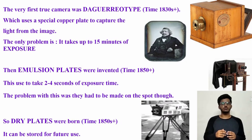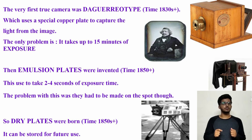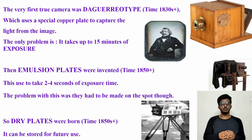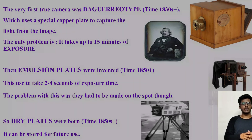Evolution of the camera — it all started with camera obscura in the 11th century. The very first true camera was invented in the 1830s, which was the daguerreotype, using a special copper plate to capture light from the image. It used to take up to 15 minutes of exposure to fully capture the image. Then dry plates were born in the 1850s, and this camera used to take just 2 to 3 seconds of exposure, though the camera was still big.